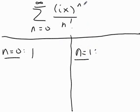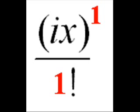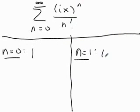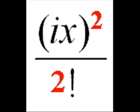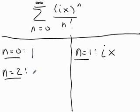I substitute n equals 1, I get ix to the first power over 1 factorial, and I'm going to write that as i times x. Let's look at n equals 2. I've got i squared, which is negative 1, x squared over 2 factorial. I'm going to write that as minus x squared over 2.